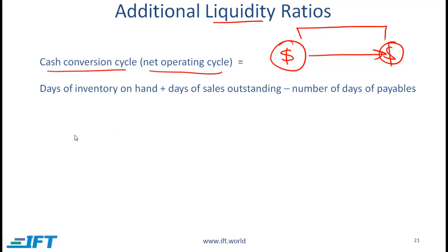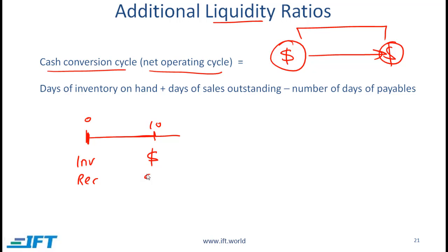To understand this formula, let's look at a simple example. Let's say that a company orders inventory here — this is where the inventory is received. Then the payment for that inventory happens 10 days later, so on day 10 is when we make the payment; this is where money goes out. Let's say that the days of inventory on hand is 30, which means that it takes 30 days to convert this inventory into product which is sold. That means on day 30 is where the sale happens.